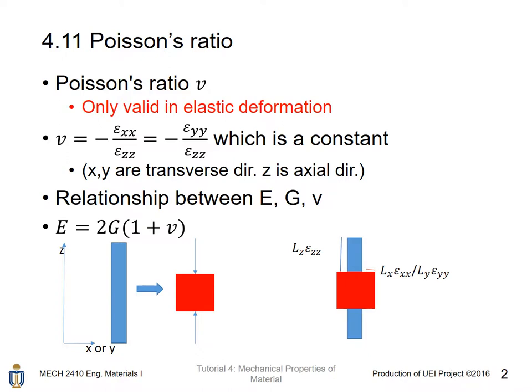Poisson's ratio relates the strain value in the transverse direction with the strain value in the axial direction, which is only valid in the elastic deformation. See the picture below. For a force applied in the Z direction, which is the axial direction.